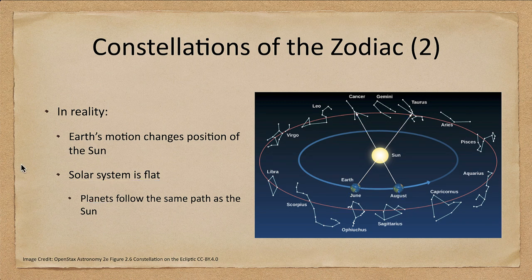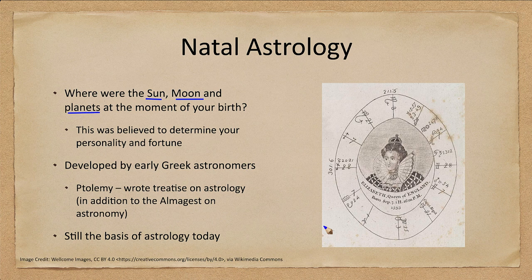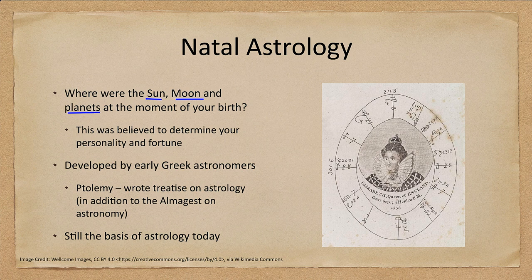Natal astrology specifically looks at where the Sun, the Moon, and the planets were at the moment of your birth. Here we see a birth chart for Queen Elizabeth the First of England, using her birthday and birth time. You also need to know the location. The various symbols tell you where the planets were and what things were rising or setting at the time — all of which were considered very important. Astrology has been around for a long time and was developed by early Greek astronomers including Ptolemy, who also gave us a treatise on astrology.